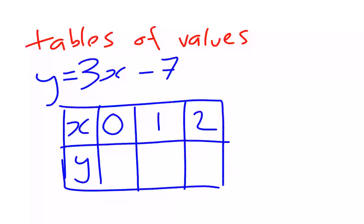We can also substitute using a table of values. When instead of just substituting in one value for an unknown, we say, what would happen if this value was 0 or 1 or 2? In this expression, y equals 3x minus 7, we're going to see what happens if x was 0 and then 1 and then 2. We substitute each value in turn.